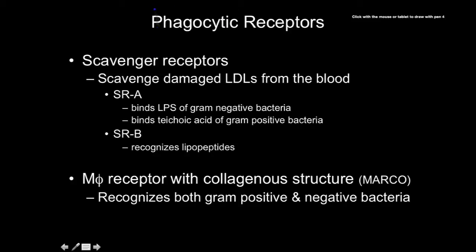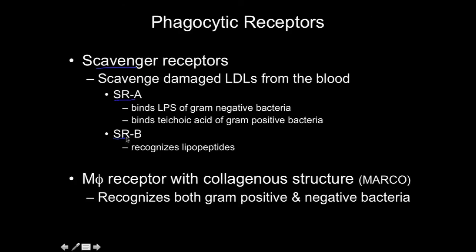The next type is scavenger receptors, so called because they scavenge and recycle damaged LDL cholesterol from your blood. There are two types: SRA and SRB. SRA binds to the lipopolysaccharide of gram-negative bacteria — which is the poster child example of a conserved pathogen-associated molecular pattern — and also binds to the teichoic acid of gram-positive bacteria.